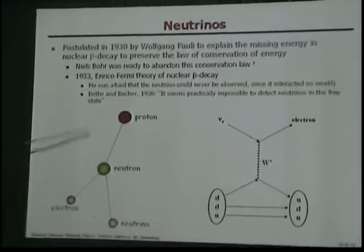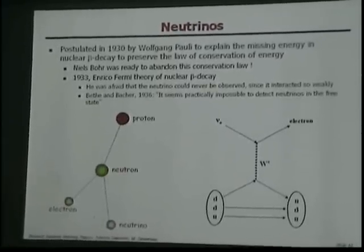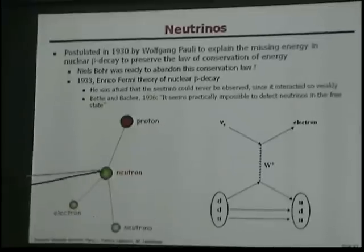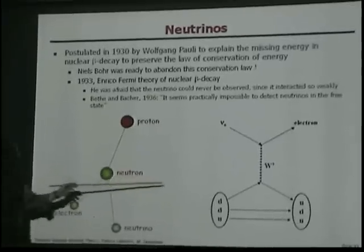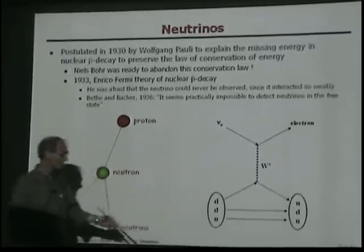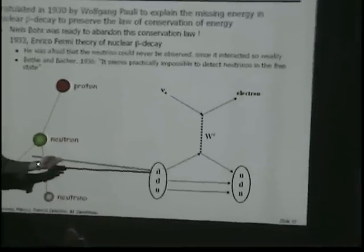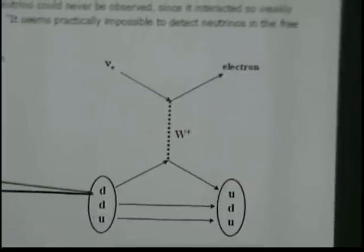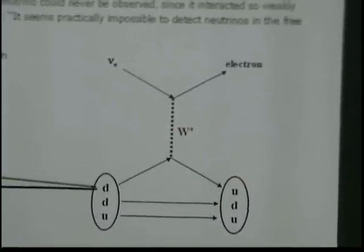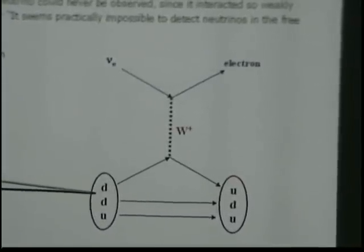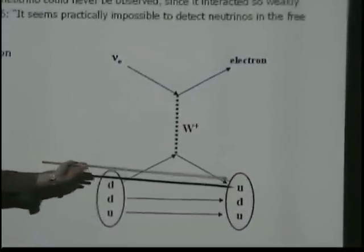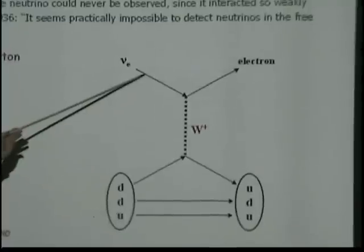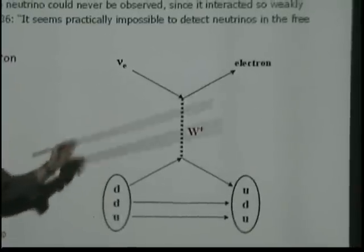The modern-day way we look at this is: here's the neutron composed of three quarks — a d, a d, and a u. The way we look at it these days is that a d-quark decays into a u-quark through the emission of the weak interaction, and decays into a neutrino and an electron.